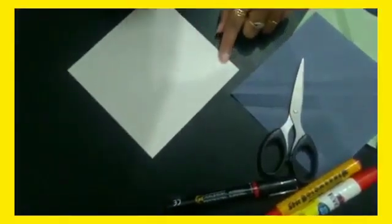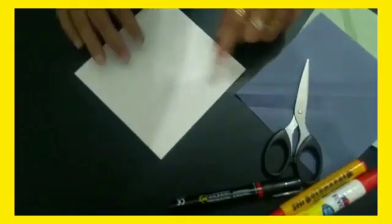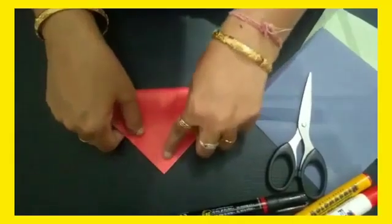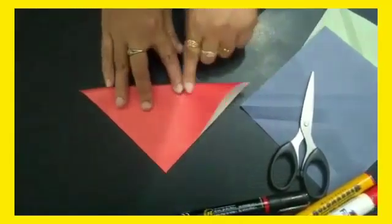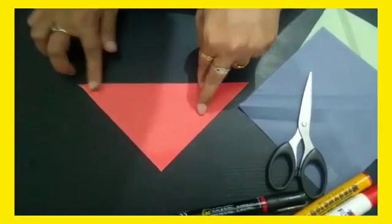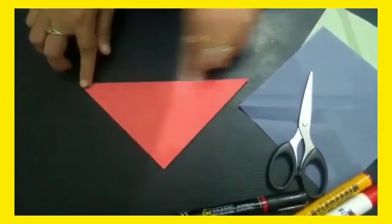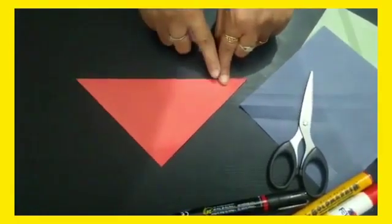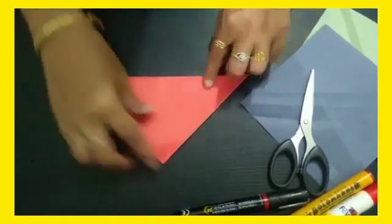See, this is the origami sheet and these two corners you have to join like this. And pull it from this, like this. It will become a triangle. Can you see? Now what you have to do...